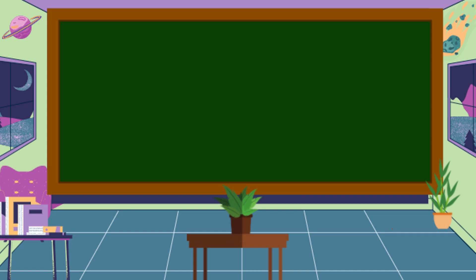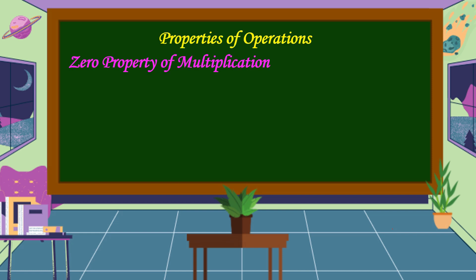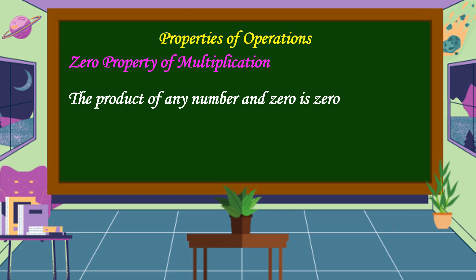The last property we are going to discuss today is the zero property of multiplication. The product of any number and 0 is 0. For example, 5 times 0 is equal to 0.